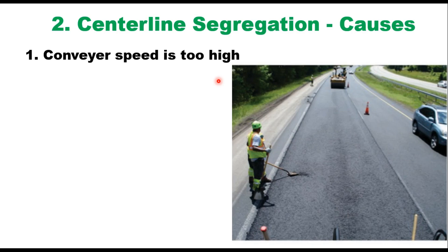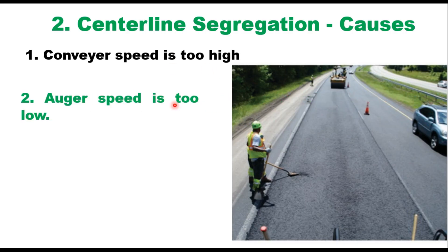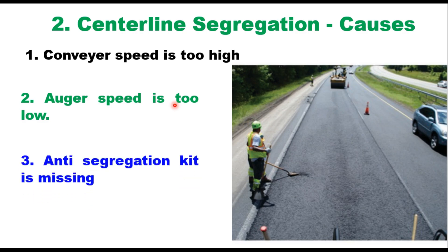There are three main causes of centerline segregation. The first is conveyor speed is too high — high conveyor speed often means that large aggregate is pulled away from the mix as it rubs the side guards along the conveyor. The second is auger speed is too low — high conveyor speed usually means low auger speed and the large aggregate rolls into the dead area under the center chain case. The third is absence of an anti-segregation kit — that is, guards and deflectors at the ends of the left and right conveyors. This anti-segregation kit should be inspected frequently to make sure it has not been damaged or is not badly worn.